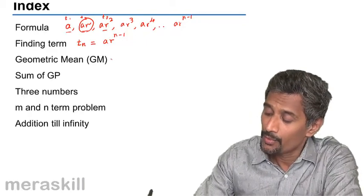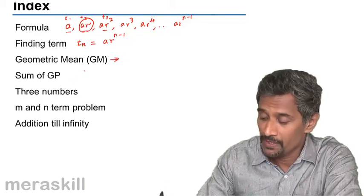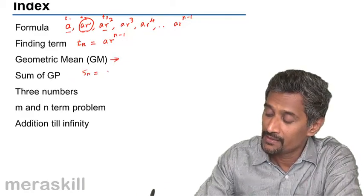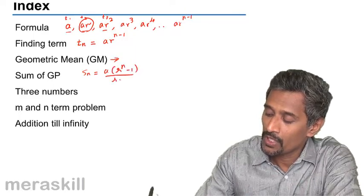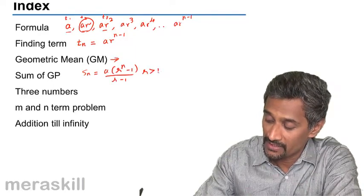Then we will be taking up the concept of sum of GP, which is going to be Sn equals A into R raised to n minus 1 upon R minus 1 if R is greater than 1.